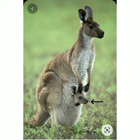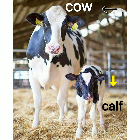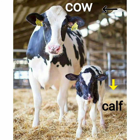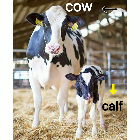Next is cow and calf. C-O-W, cow and calf. C-A-L-F, calf. Yani, gaay or gaay ka bachda. Hindi mein isse kehte hain.